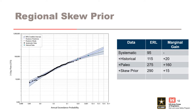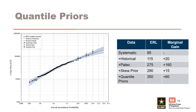Next, we add information from a regional skew study input as a prior distribution on the skew parameter in Best Fit, which gives us an additional 15 years of effective record length, increasing the total to 290. Finally, when we add precipitation frequency rainfall-runoff analysis information as a quantile prior distribution in Best Fit, we gain another 60 years, resulting in a final effective record length of 350 years. This demonstrates the value in combining and including all possible sources of data and information into our frequency analysis.